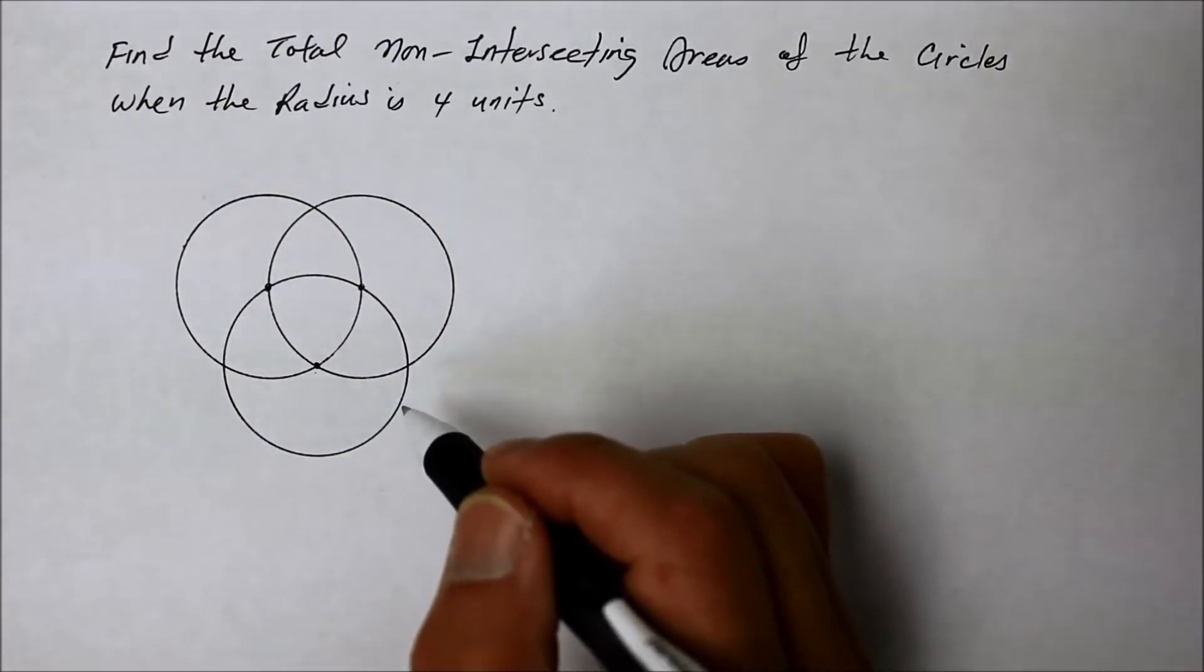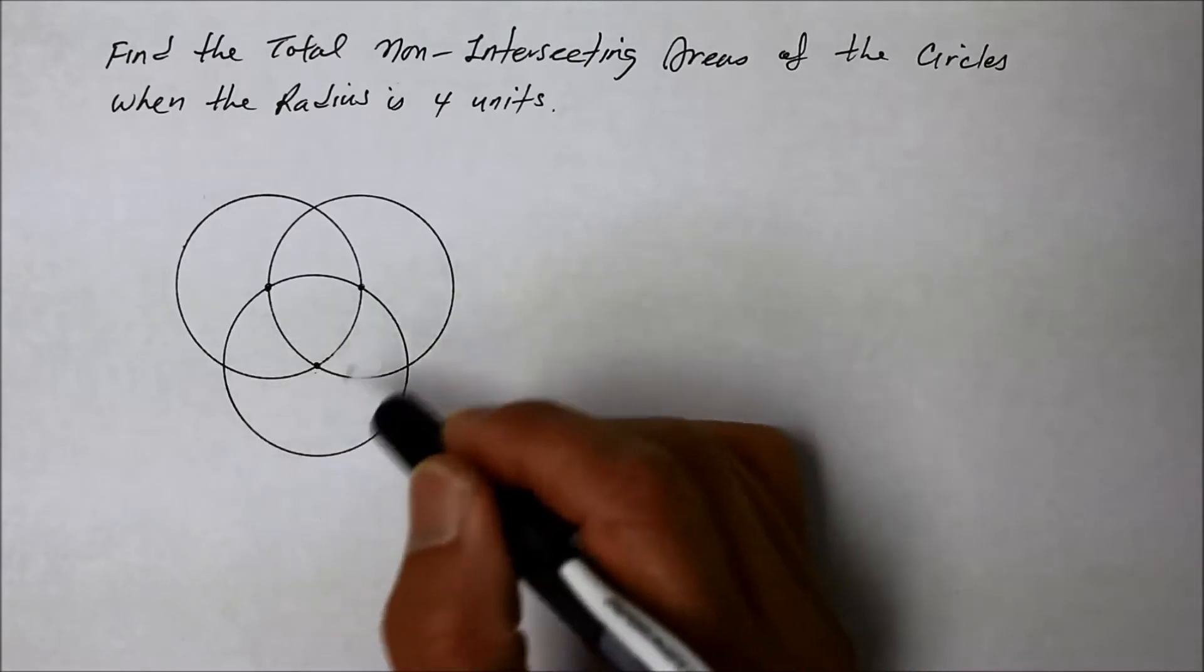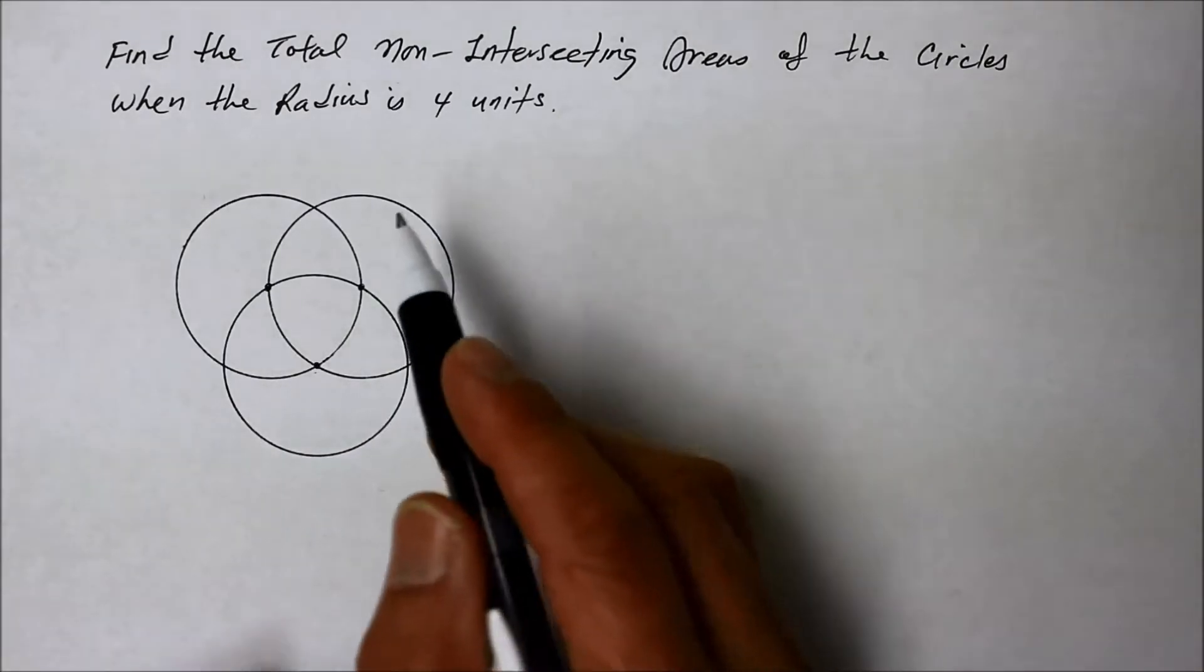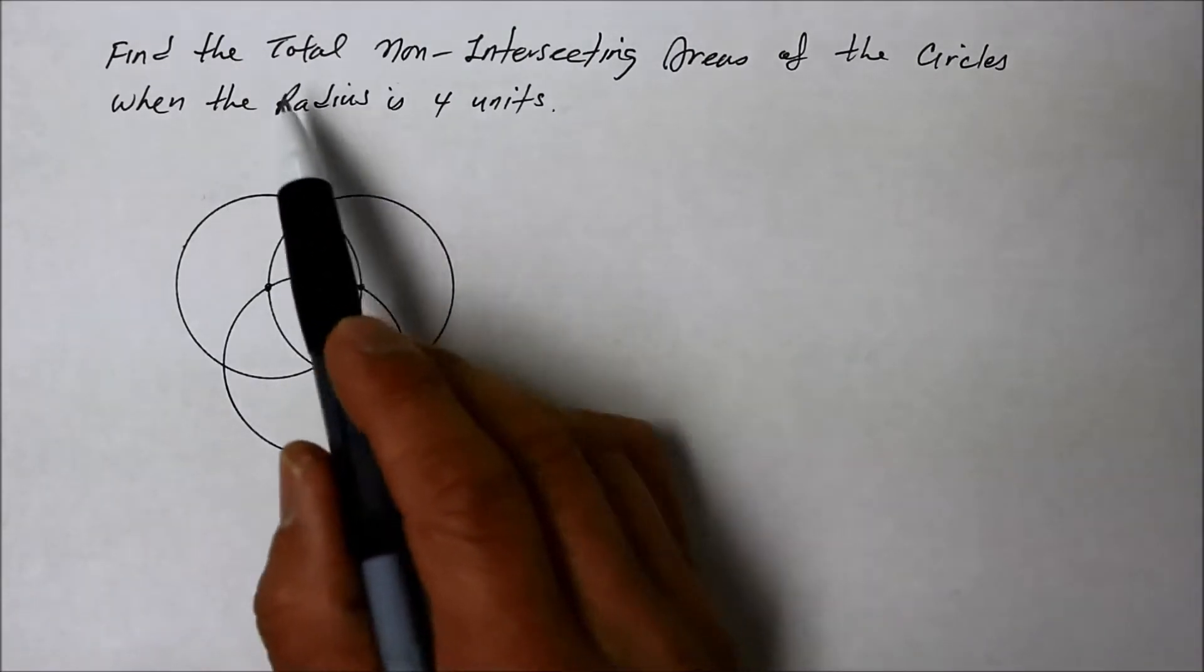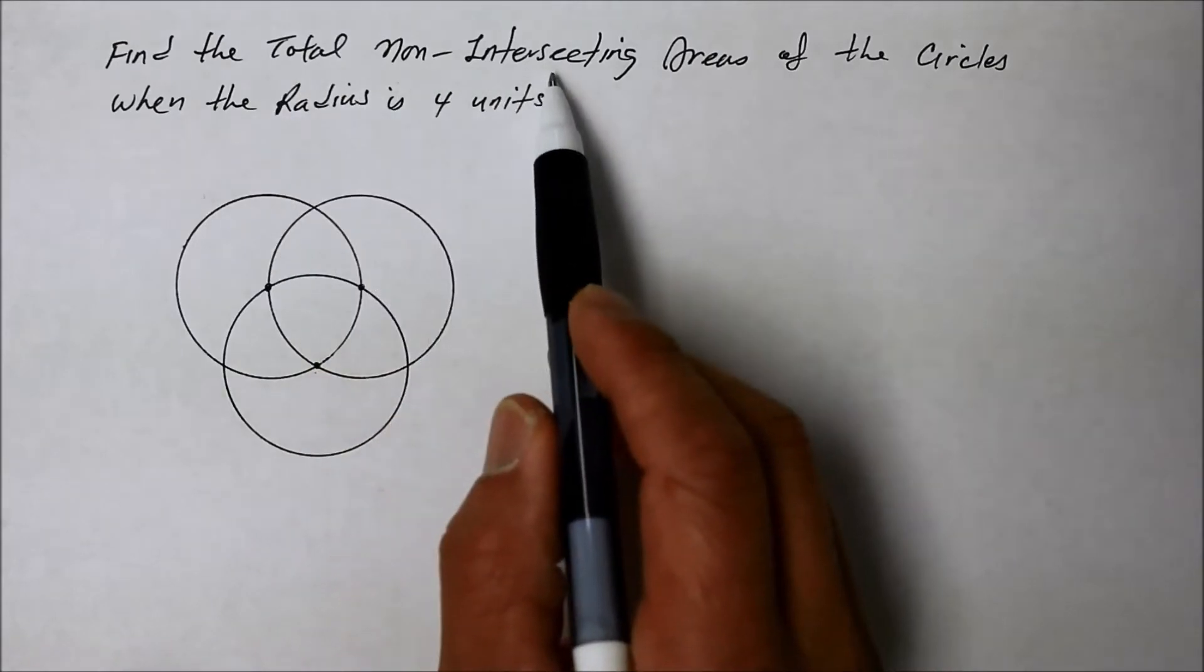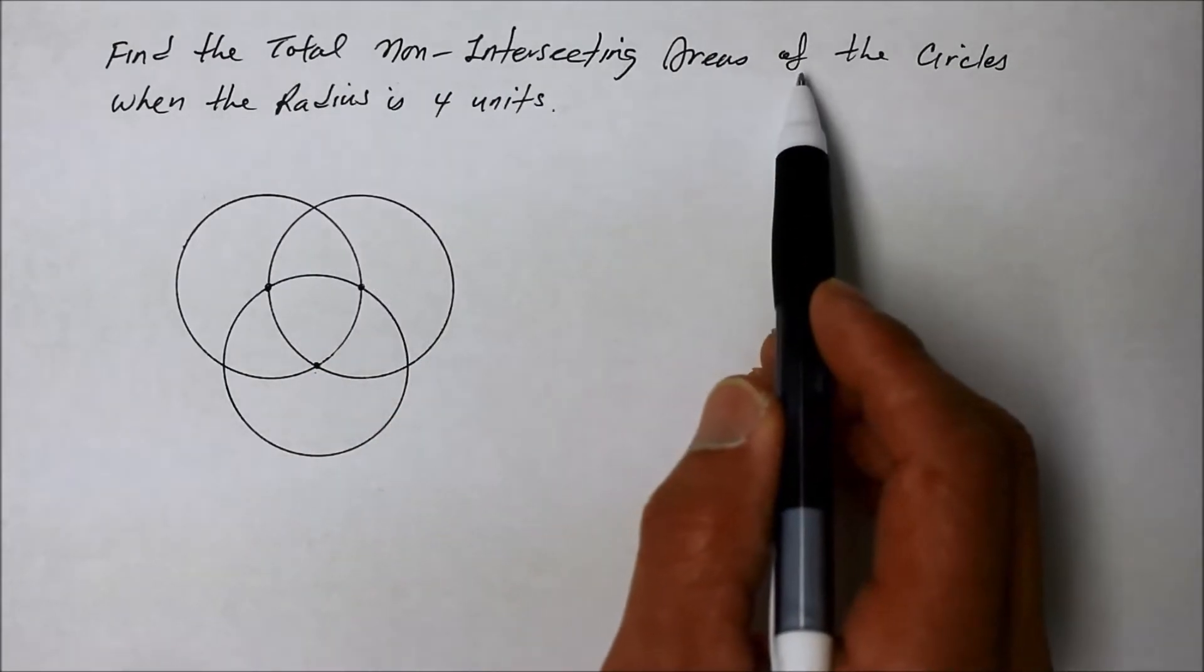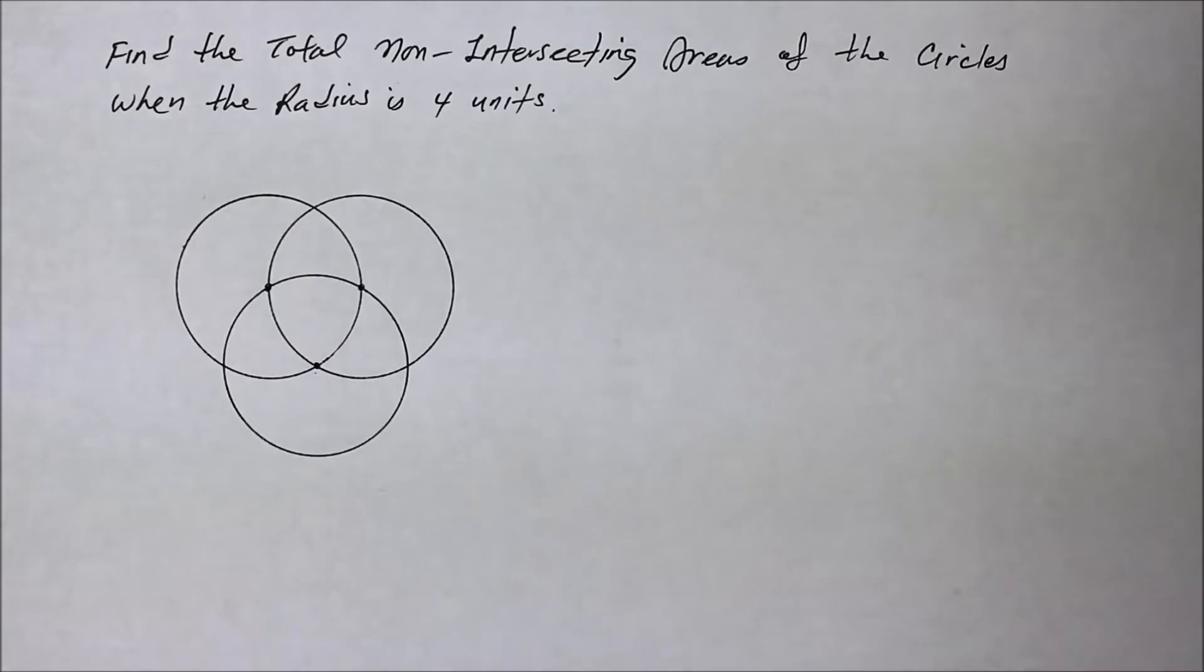I could just go crazy and make a whole bunch of these things and see what happens. But here's the question for this one: Find the total non-intersecting areas of the circles when the radius is four units.